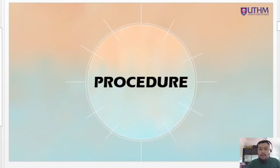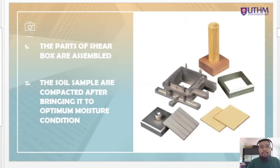Good evening and good afternoon. The slide continues to me so I can explain or present about the procedure of the experiment. We start by looking at the first step. As you can see on the right side, the image, that is the parts of the shear box. The first step we need to do for the experiment is the parts of the shear box are assembled.